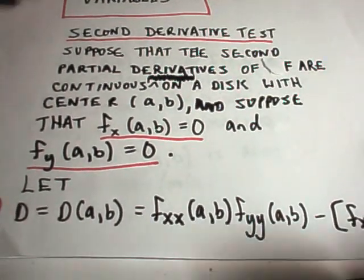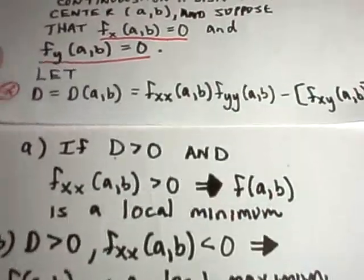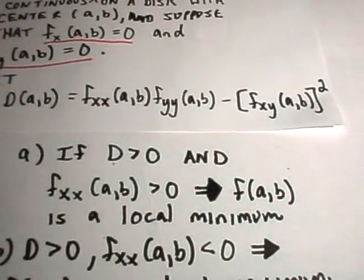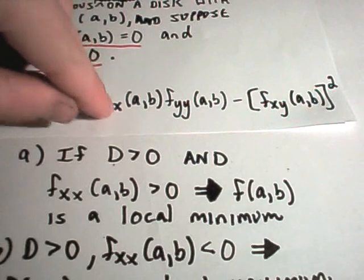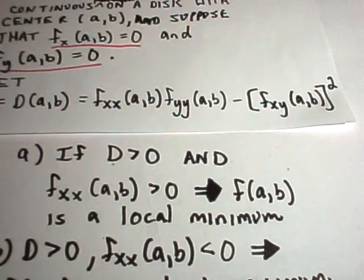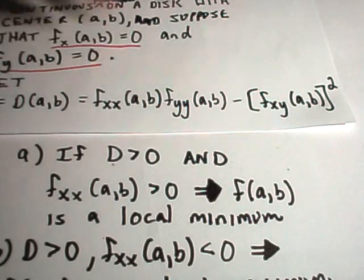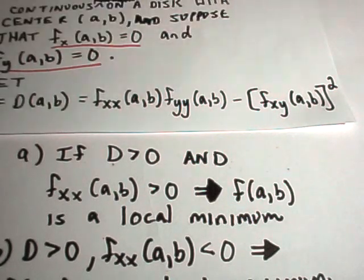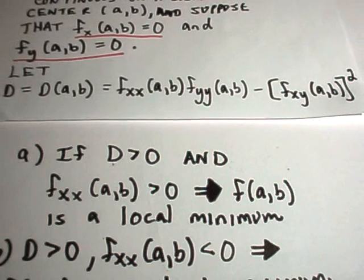Once we have that, we're going to let D be this value where we take the second partial with respect to x, again with respect to x at a, b, do the same thing with y, and then take the partial with respect to x and y, plug our point a, b in there, and evaluate this. Depending on the value we get out for this D value, it's going to help us conclude whether we have a maximum or a minimum.